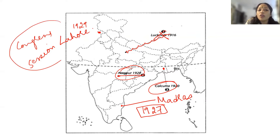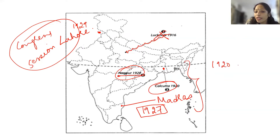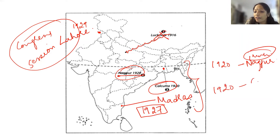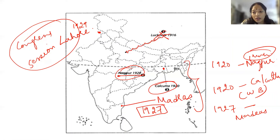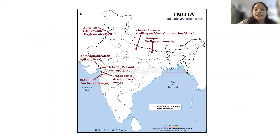So this is all about Congress sessions. In your portion, only these three places are there: 1920 Nagpur — it's in Maharashtra; 1920 Calcutta session — West Bengal; and 1927 Madras session. Note that Madras is now known as Chennai and Calcutta is still known as Calcutta. These are for the Congress sessions.